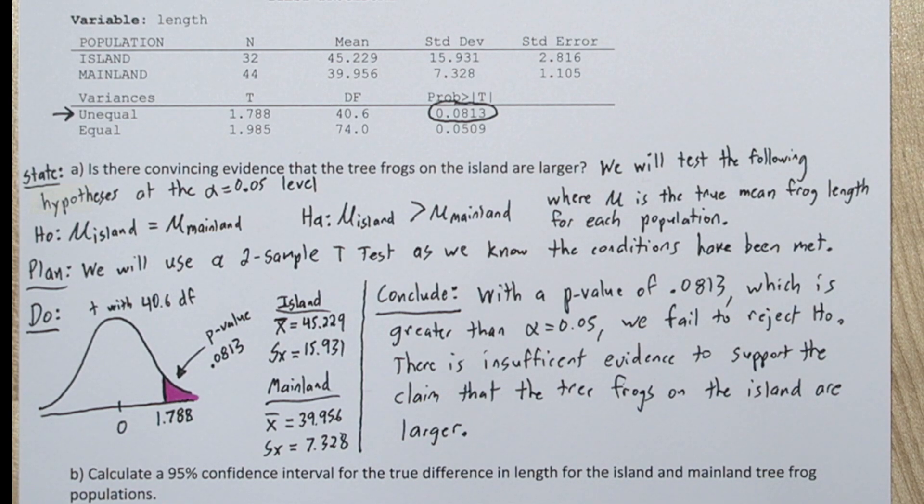Now there's a possibility we're making a type 2 error here. The tree frogs on the island might in fact have a true mean length that's longer than the tree frogs on the mainland. But our two samples didn't give us enough evidence to make that conclusion. So for now we have to say there's insufficient evidence.